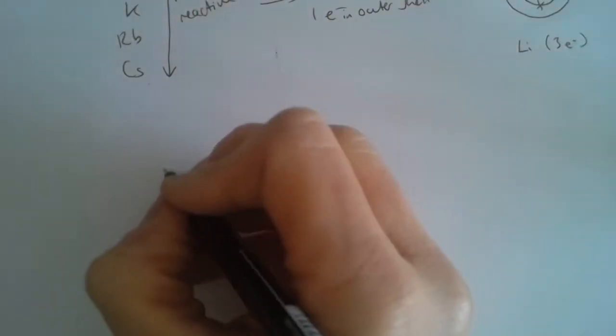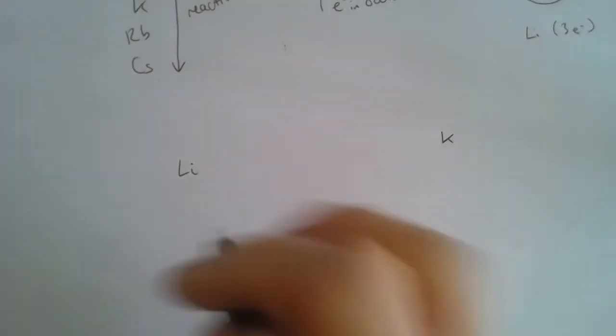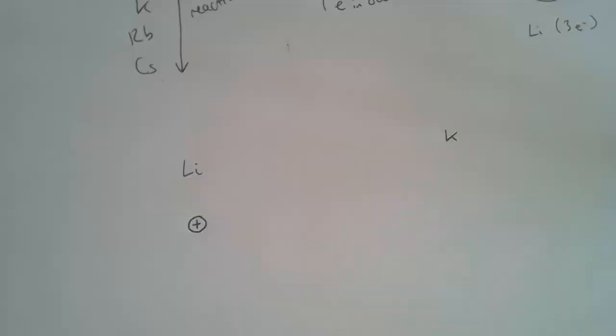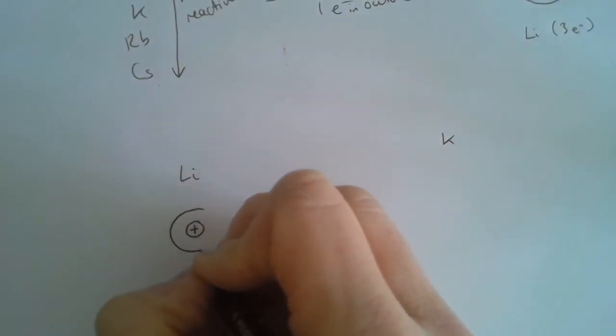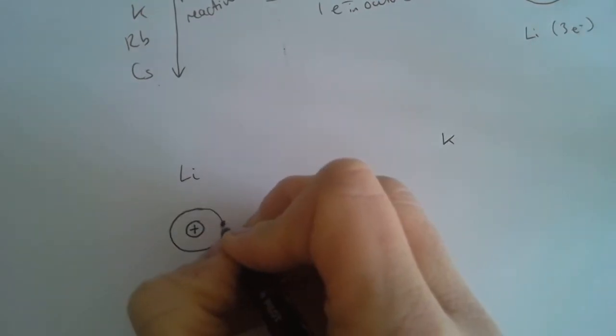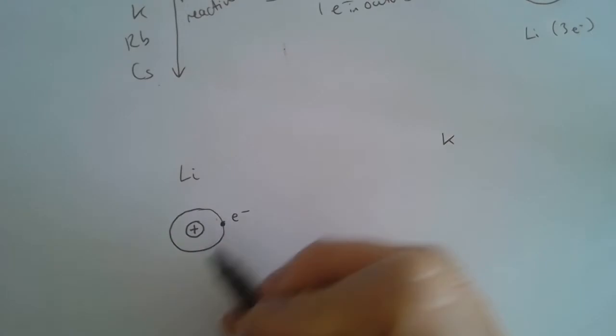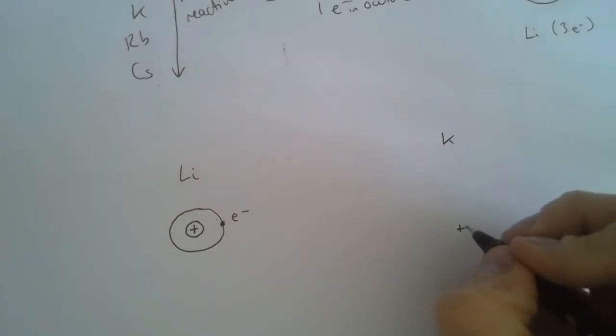Let's compare two elements. We're going to compare lithium and potassium. I'm only going to draw now a positive charge here to represent the nucleus and the outer electron shell, and I'm just going to put one electron there. So that's representing the outer electron shell of lithium.